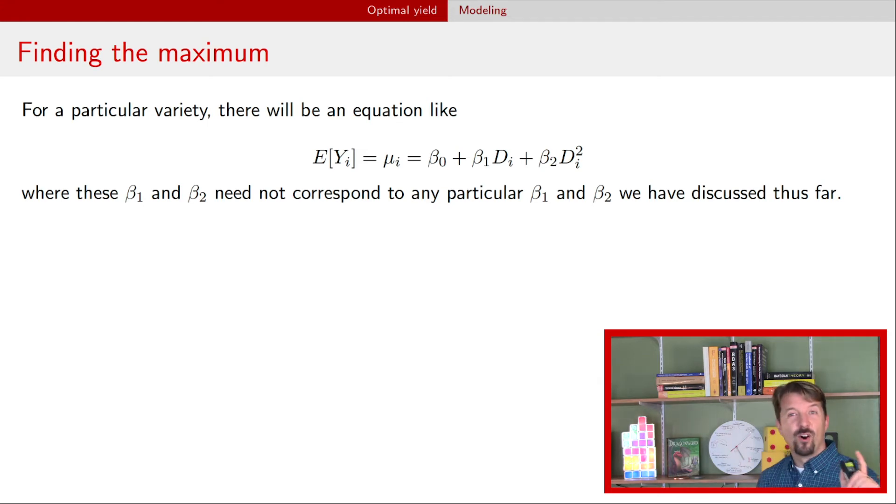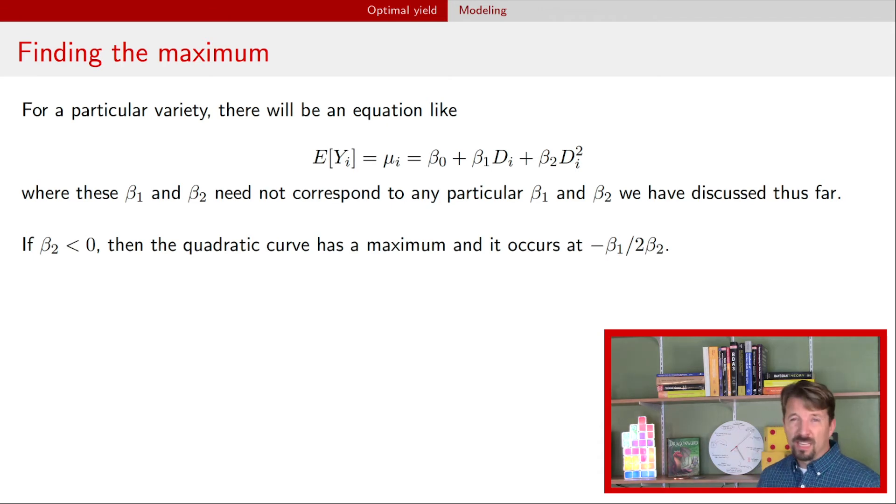Alright so hopefully you paused and found out the answer. The answer is well number one you only have a maximum if β₂ is negative. If β₂ is negative then it turns out the maximum occurs at this value: negative β₁ over 2β₂. So if you have point estimates for β₁ and β₂ you can just plug them in and that gives you a point estimate for the density that provides maximum yield.